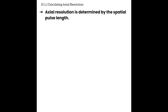Axial resolution is determined by the spatial pulse length. Recall that spatial pulse length, or SPL, is the distance that a pulse takes up in space. We can calculate SPL and therefore calculate axial resolution. The formula for SPL is: SPL in millimeters equals the number of cycles in a pulse multiplied by the wavelength in millimeters. And here is the formula for axial resolution: axial resolution in millimeters equals SPL divided by 2.